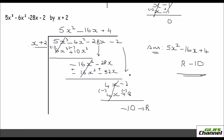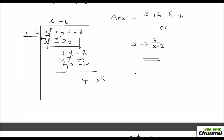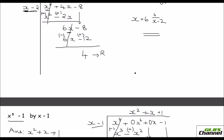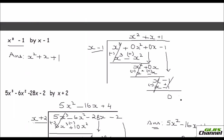Now you have done three problems. If you get the remainder as 0 — in the second problem you got the remainder as 0 — in that case you can say that x minus 1, the divisor, is a factor of that dividend. If your remainder is 0 it means that the divisor is a factor of the dividend.